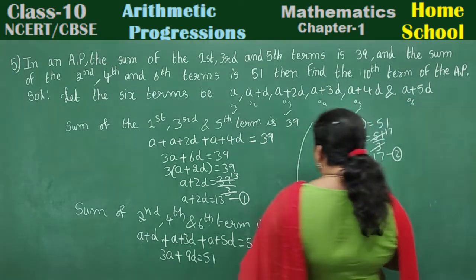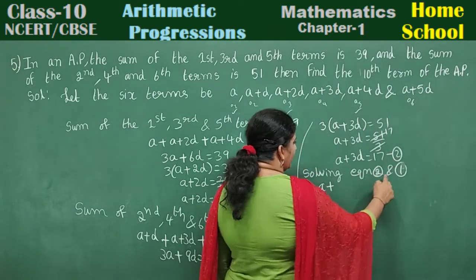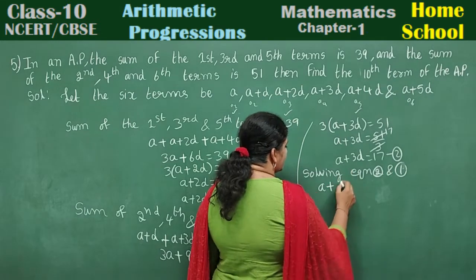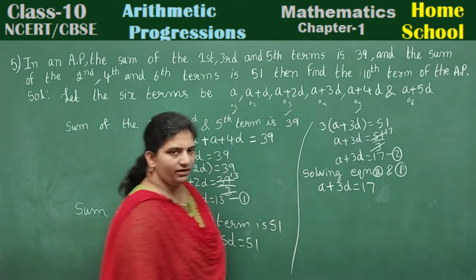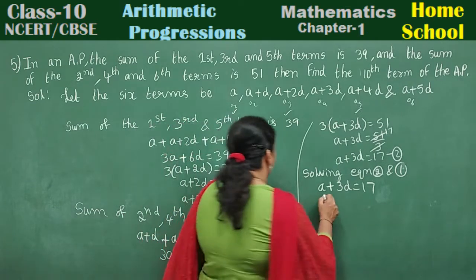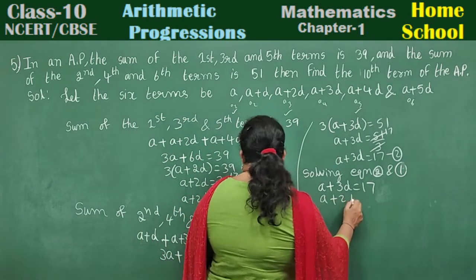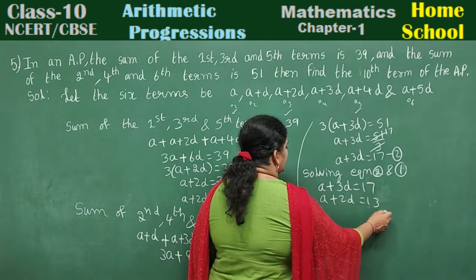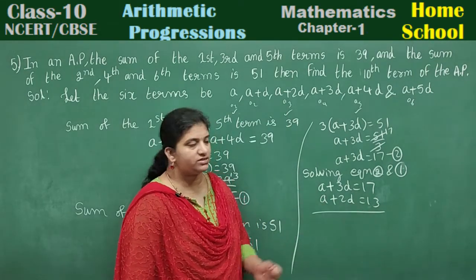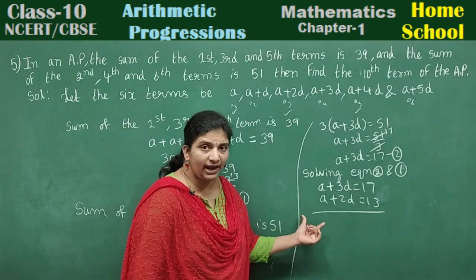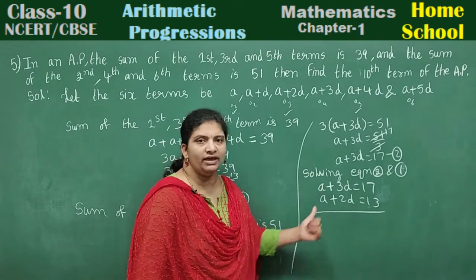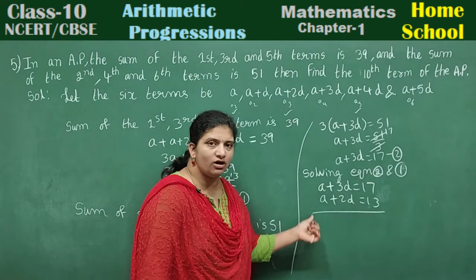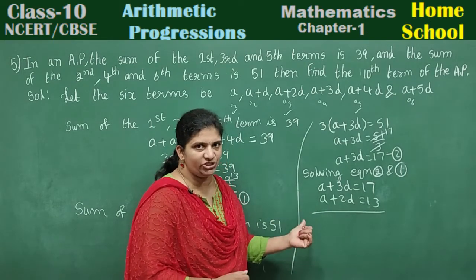Now solve these two equations. Solving equation 2 and 1: a plus 3d equals 17 and a plus 2d equals 13. How do we solve these? We are going to subtract the equations by elimination method. We eliminate one variable.